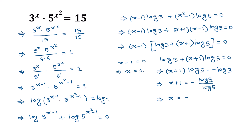Applying the formula: log a divided by log b equals log base a of b — we can write log 3 divided by log 5 as log base 3 of 5. So the value of x equals negative log base 3 of 5 minus 1. Therefore the two solutions of this equation are x equals 1, or x equals negative log base 3 of 5 minus 1. If you like this video please subscribe to my channel.